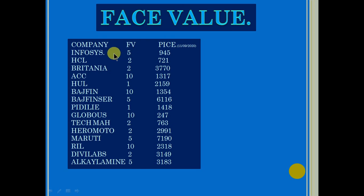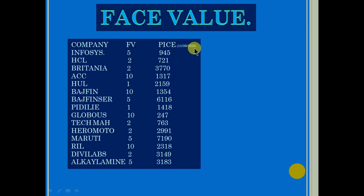The face value of Infosys is 5, and against this the price on 11th September 2020 was 945. Similarly, you can see the prices of the other shares here — all mentioned prices are closing prices of 11th September 2020. You can see the face values: 5, 2, 2, 10, 1, 5, 2, 2. There are also 2 stocks with a face value of 4 in the sector.